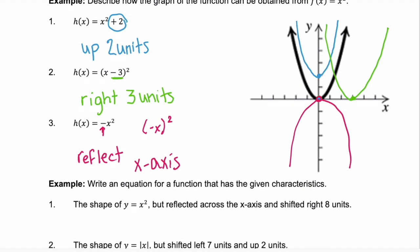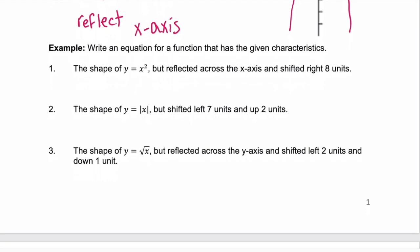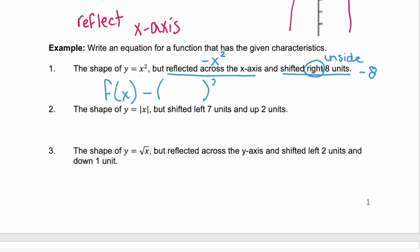What if you're told what your mother function is and then given characteristics about how it gets transformed? Example one: we have the shape of y equals x squared. We need to reflect it across the x-axis, making it negative x squared. Then it shifts right 8 units. Since it's right, we know that needs to be inside, and going right means negative 8. So f of x is going to be negative, with minus 8 inside, then squared.